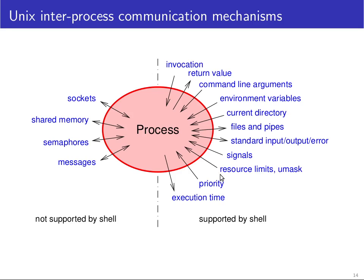You can restrict the resources a process has access to using the `ulimit` command — for example, setting a maximum amount of RAM, CPU time, or stack size. There's also a umask that influences the default permissions of files the process creates. You can give the process a priority, and when it exits you can query its execution time. The shell provides access to all of these mechanisms.